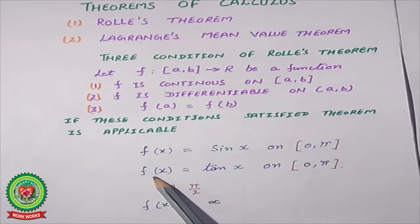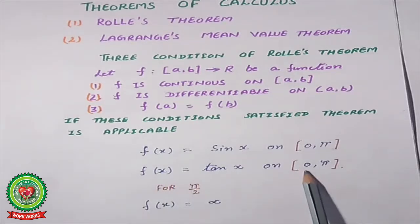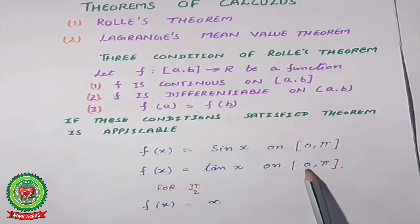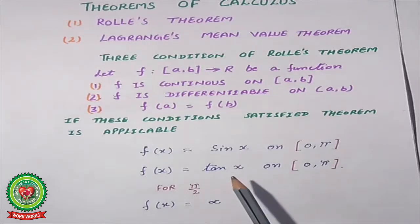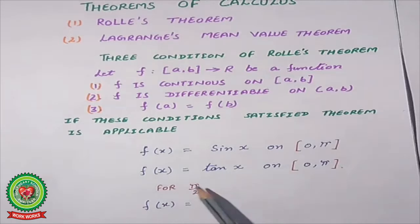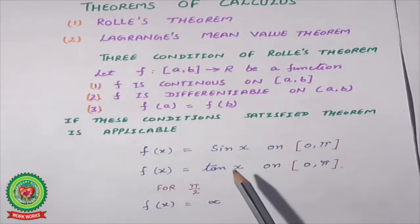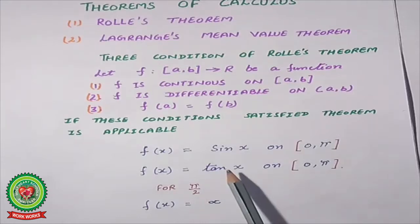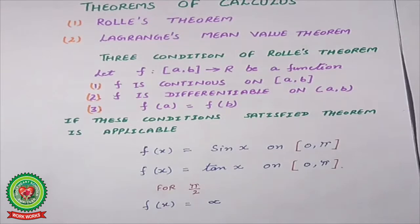Now for a counter-example: take f(x) = tan(x) on [0, π]. tan(0) = 0 and tan(π) = 0, so the endpoint values are equal. But at x = π/2, tan(π/2) = infinity — there is no value. That means the function is not continuous. If the function is not continuous, Rolle's theorem is not applicable.